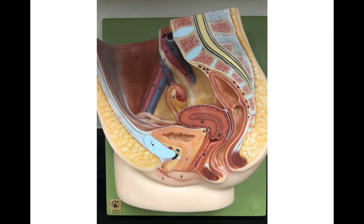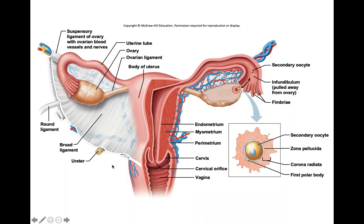Let's talk more about the ovaries, since those are the primary sex organs of the female reproductive system. Looking at this cartoon image, these are the ovaries. Some supporting elements you need to identify: these are the suspensory ligaments, which hold the ovary at its upper end and surround the ovarian blood vessels, lymphatic vessels, and nerves—so the blood supply to the ovaries runs through the suspensory ligaments. Another supporting element is the ovarian ligaments, which connect the ovary to the uterus.